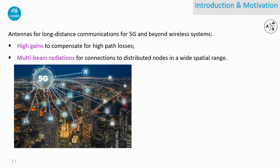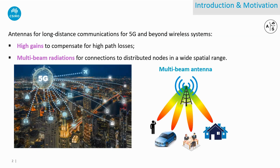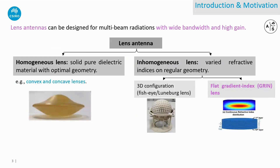To serve long-distance communications for 5G and beyond wireless systems, antennas are desired to have high gains to compensate for high path losses. On the other hand, multi-beam radiations are highly demanded in order to support connections with multiple distributed users. Among different antenna types, lens antennas can be designed for multi-beam radiations with wide operating bandwidth and high gain.